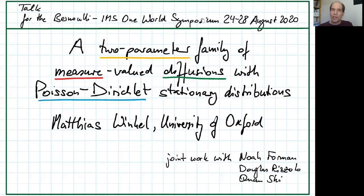My talk is about a two-parameter family of measure-valued diffusions with Poisson-Dirichlet stationary distributions. This solves a conjecture by Fang and Sun, and this is joint work with Noah Foreman, Douglas Rieslow, and Chuan Shi, and also Shu Mikpal for some relevant parts.